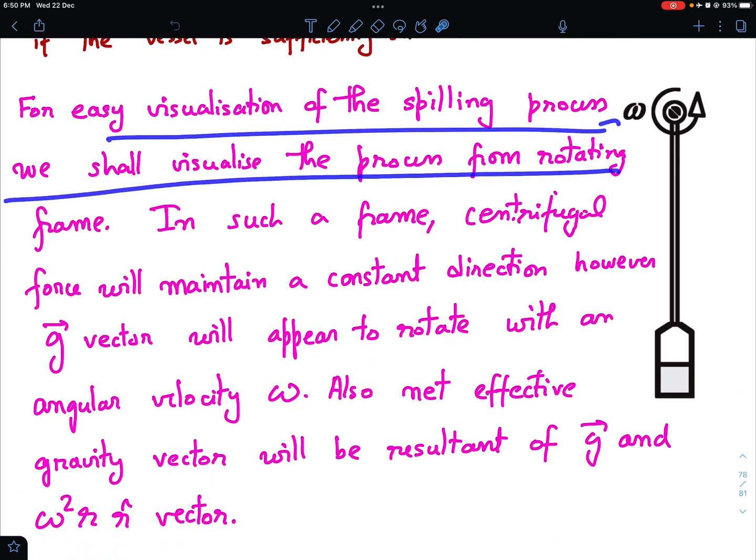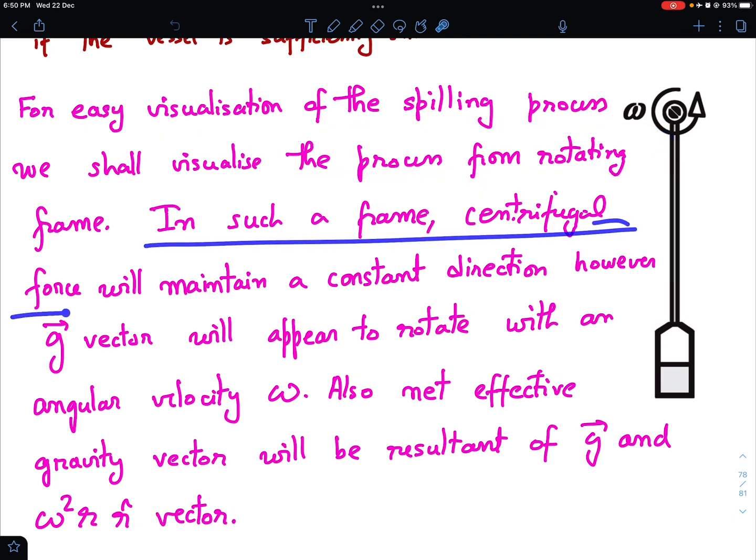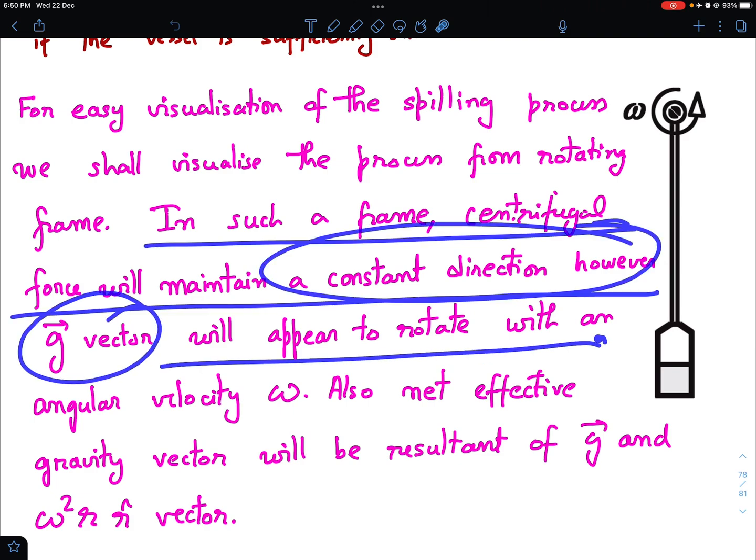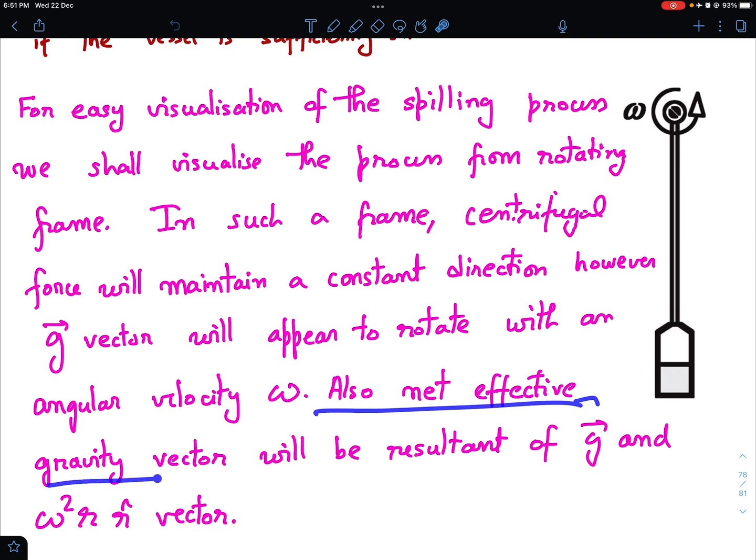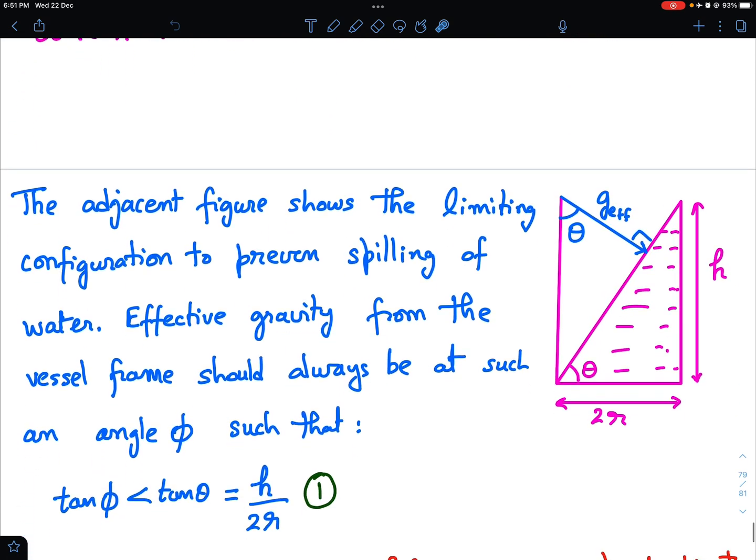For easy visualization of the spilling process, we shall visualize the process from the rotating frame. In such a frame, the centrifugal force will maintain a constant direction. However, g vector will appear to rotate with an angular velocity omega. And also, net effective gravity vector will be the resultant of g vector and the omega squared r cap. In this case, r is L. R cap means the radially outward vector.